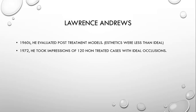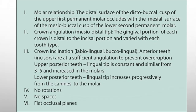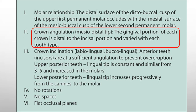He noticed that all 120 patients had some features in common, and these features he introduced in the form of six keys to normal occlusion. We will not go into the detail of each key today, but the second key about crown angulation is directly related to our today's topic — second order bends. The second key is about crown angulation and mesiodistal tip, which says that the gingival portion of each crown is distal to the incisal portion, and this angulation varies with each tooth type.